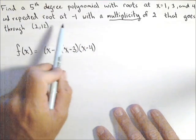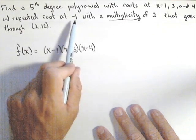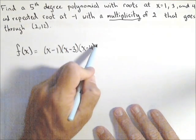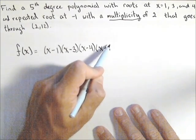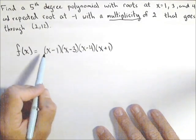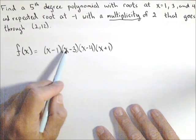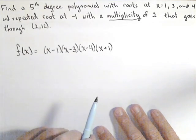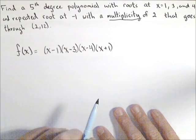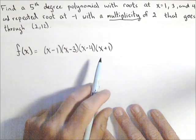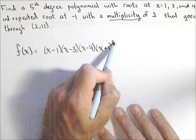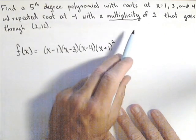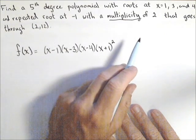Now, we have a repeated root at negative 1. So if negative 1 is a root, that means x minus negative 1 is a factor, or we could write that as x plus 1 is a factor. Right now, if you look, we have degree 1, 2, 3, 4. That is only a fourth degree polynomial, but we said we were going to have a fifth degree. This root has a multiplicity of 2. That means it's a repeated root, which means the factor is repeated two times. The multiplicity tells us how many times it's repeated.